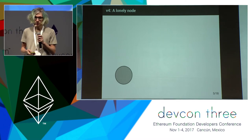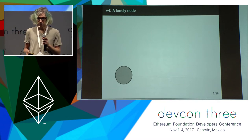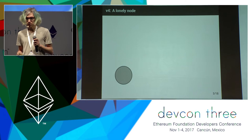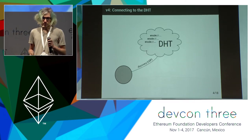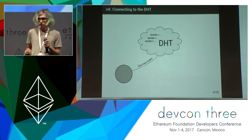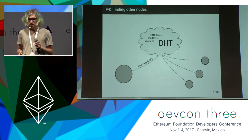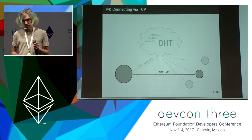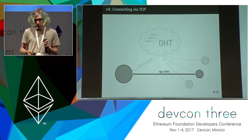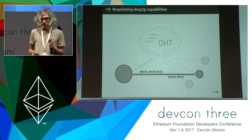Let me walk you through the protocol in use on the network today. So this dark circle is us — a node that wants to connect to the Ethereum network. We join the DHT first, which is basically the part where you can find other nodes on the network. There are other nodes registered there, and we walk the DHT at random to find someone to connect to, then try to establish a TCP connection. That connection might fail quite a lot because the node might no longer be live or might be too busy.